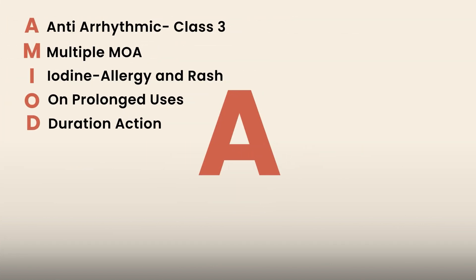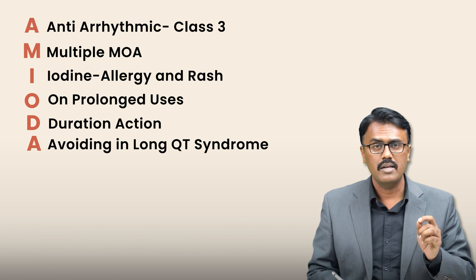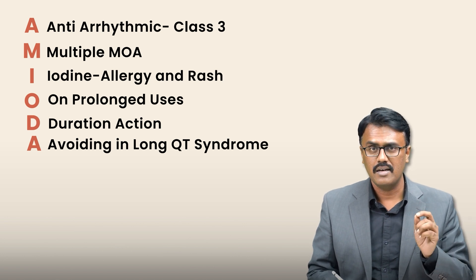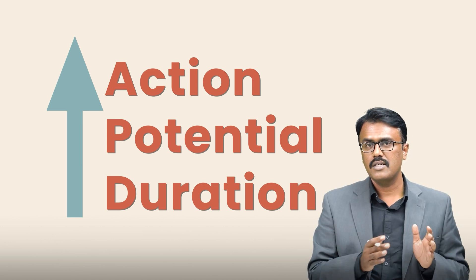The next letter is A — avoid in long QT syndrome, or avoid in a patient with interstitial lung disease. It also increases action potential duration because it blocks the potassium channel.